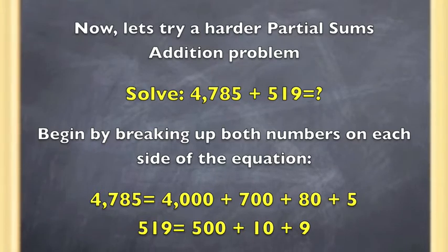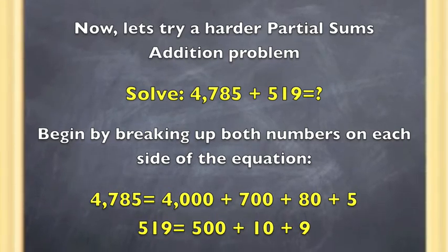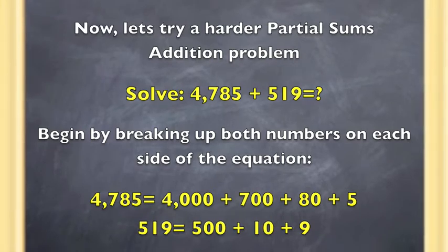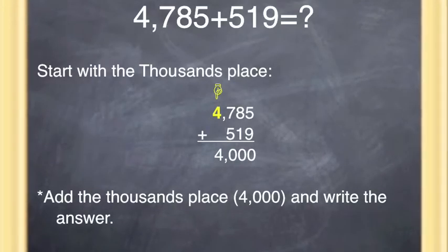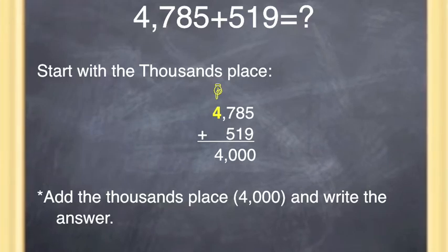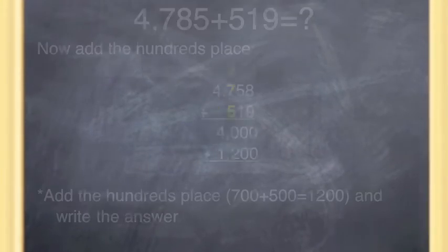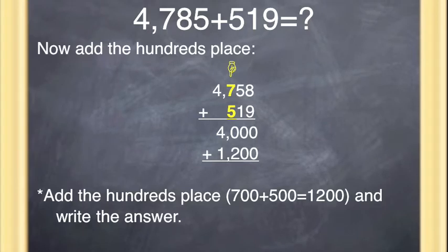Now let's try a harder partial sums addition problem. You need to solve 4,785 added to 519. First, break down both numbers: 4,785 equals 4,000 plus 700 plus 80 plus 5, and 519 equals 500 plus 10 plus 9. You are going to start with the thousands place: 4,000 — and since there is no thousands digit in 519, your answer is 4,000. Then add the hundreds place: 700 plus 500 equals 1,200 — write that under the 4,000.